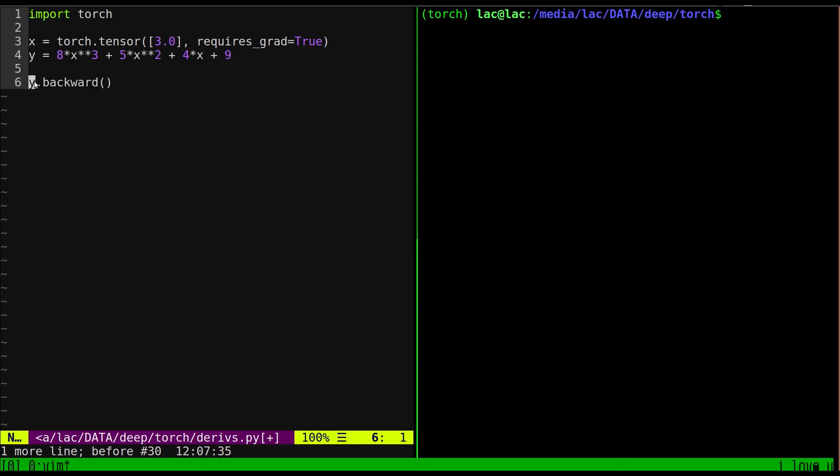Then we're going to call y.backward, which will compute derivatives of y with respect to x because, if you recall, we did the requires grad true. So if you start tracking on all operations in which at least one of the parameters has requires grad true, that's important to remember. And then basically all of these get accumulated into this .grad attribute and you can then run that and see what's in it.